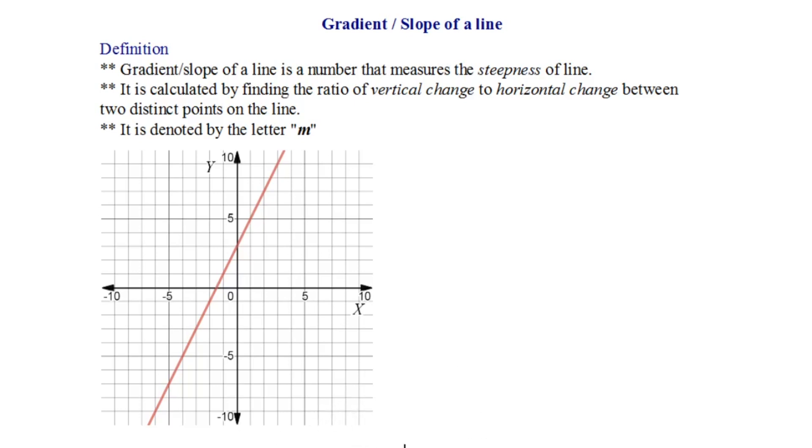Firstly, what is the slope of a line? It is the measure of steepness of line. How do we calculate the gradient or slope? By finding the ratio of vertical change to horizontal change between two distinct points on the line. Let's break this sentence and first find two distinct points on the line.